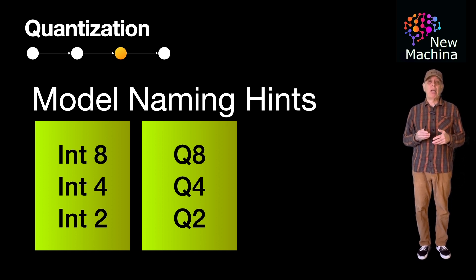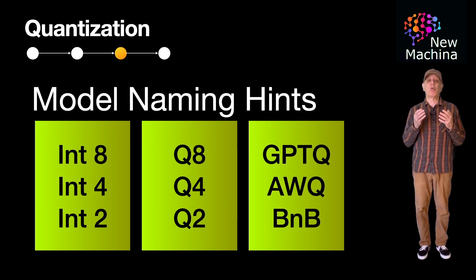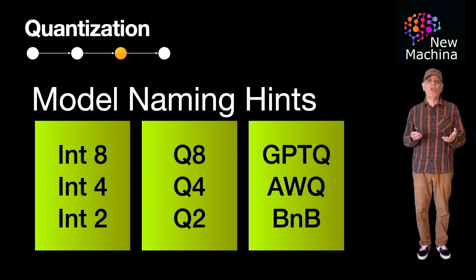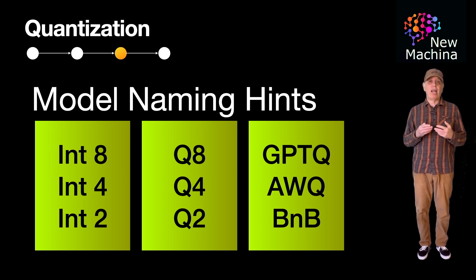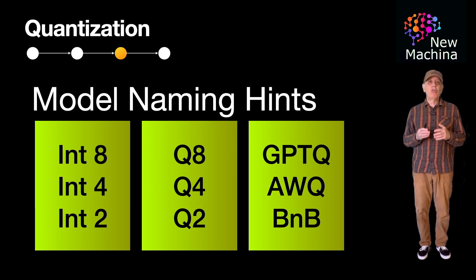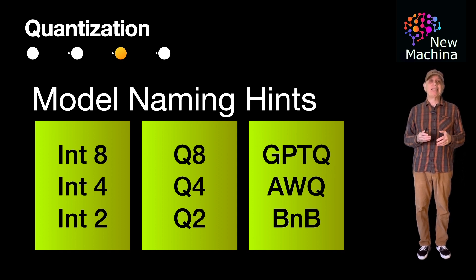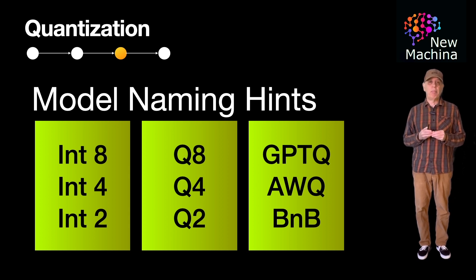Another pattern in LLM naming comes from the popular quantization methods used in the creation of the model. If you see GPTQ, AWQ, or BNB, this is also an indicator that the model is quantized. GPTQ stands for Generalized Post-Training Quantization, AWQ stands for Activation Aware Weight Quantization, and BNB stands for Bits and Bytes. GPTQ and AWQ are some of the more popular quantization techniques. BNB is a Hugging Face library used for mixed precision quantization that allows efficient inference and fine-tuning of LLMs using floating point 16, 8-bit, and 4-bit precision.